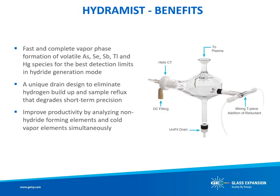For improved detection limits of arsenic, selenium, antimony, thallium, and mercury in environmental samples, cold vapor hydride generation is an alternative sample introduction method that can provide improvement in sensitivity for these elements. However, switching between a cold vapor and conventional pneumatic nebulization setup adds complexity and reduces laboratory productivity. In November of 2019, Glass Expansion introduced the Hydromist spray chamber, providing an accessory that allows for simultaneous multi-element analysis by conventional pneumatic nebulization and cold vapor hydride generation.